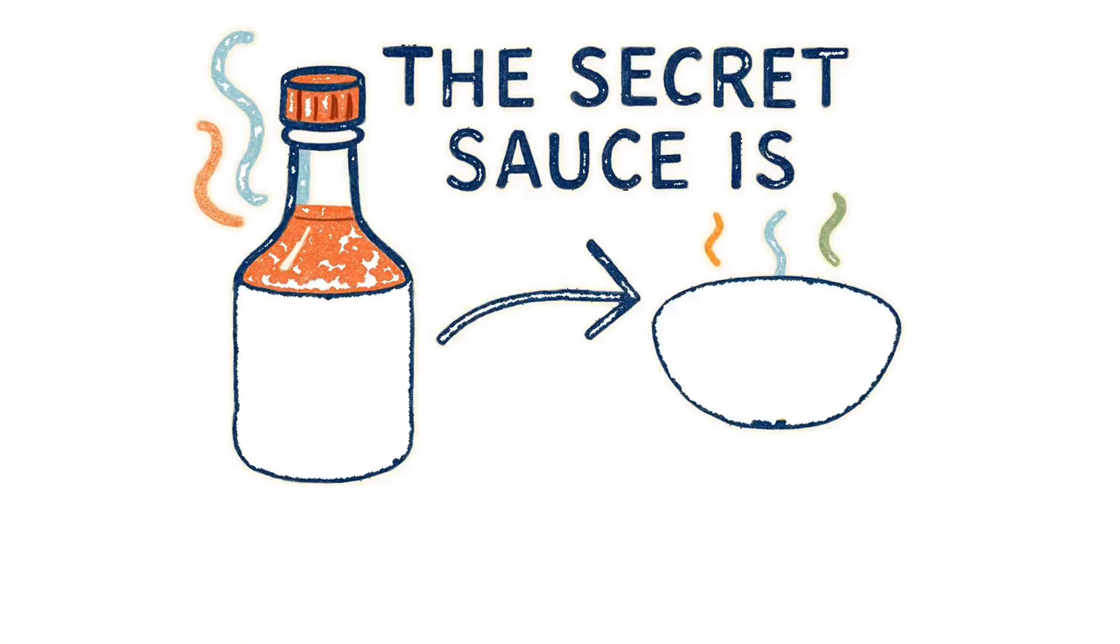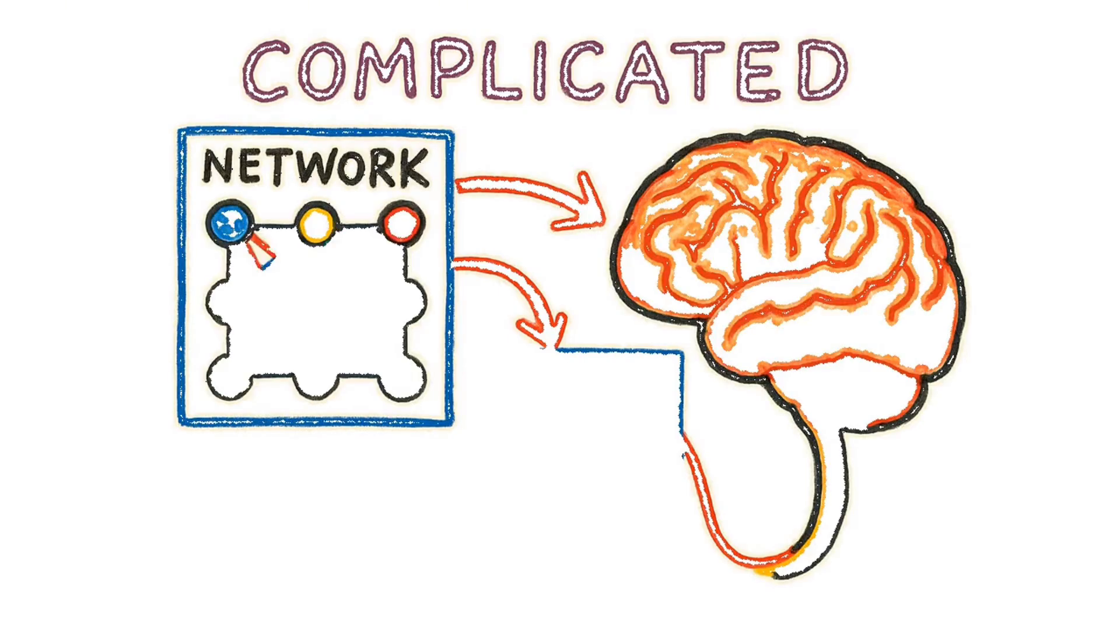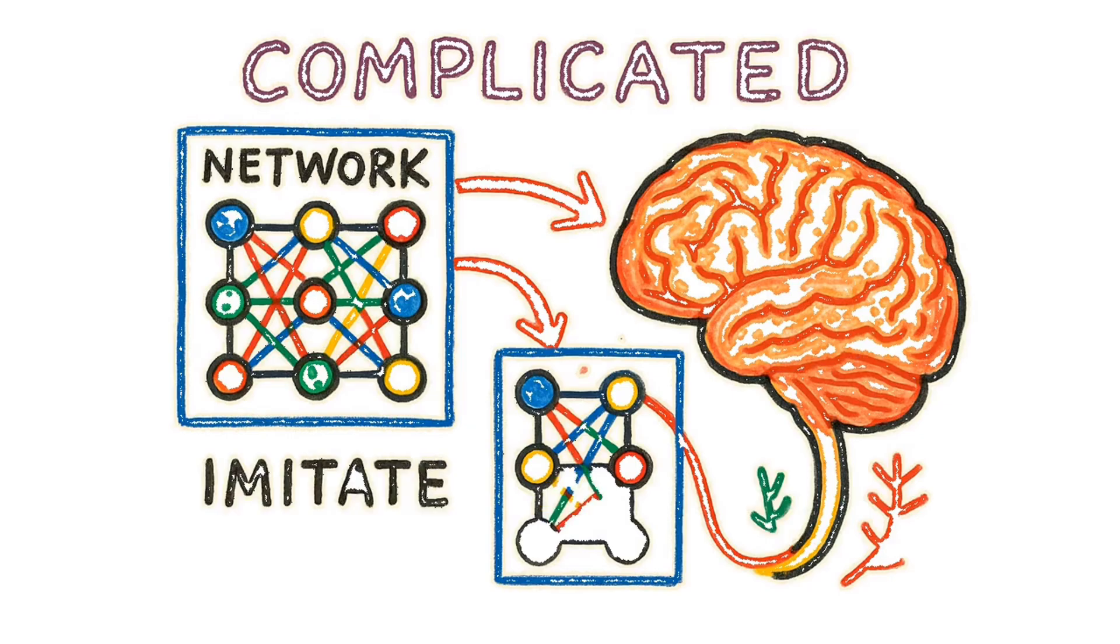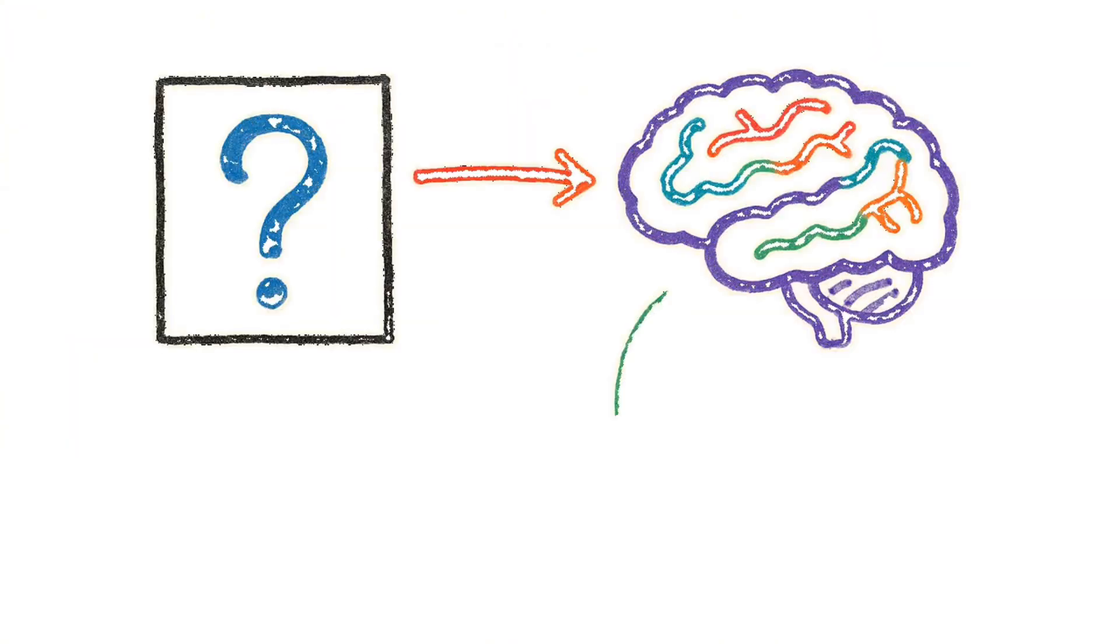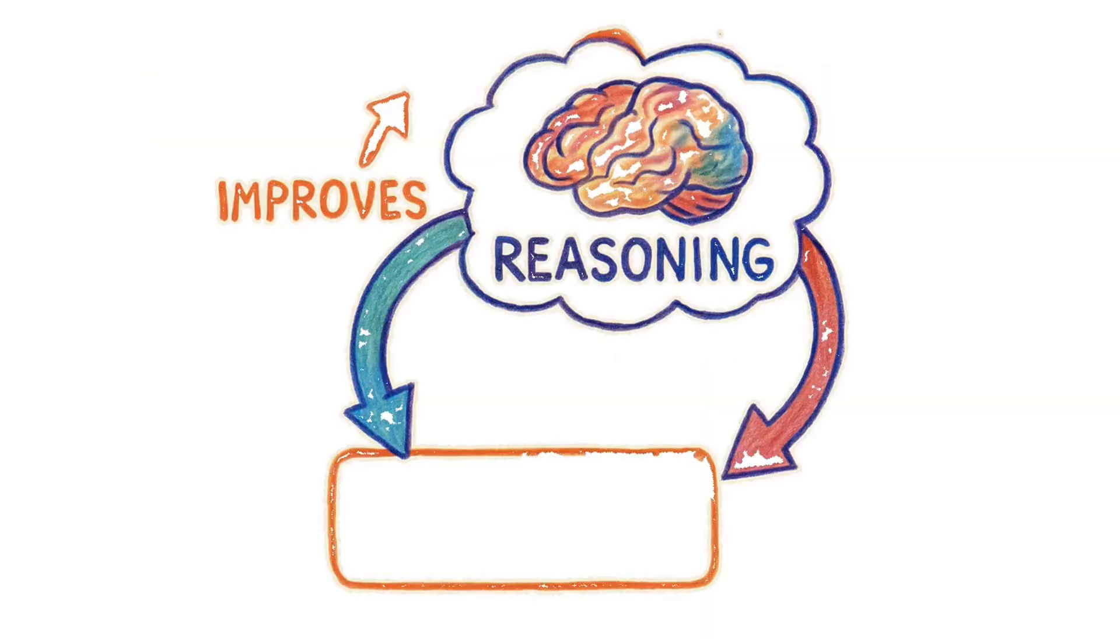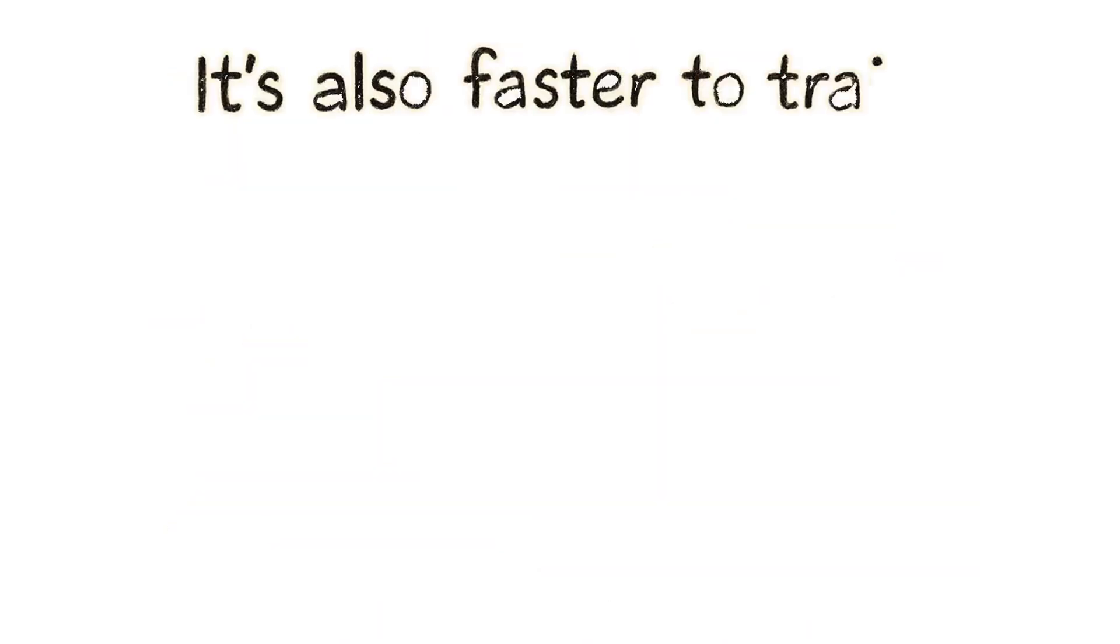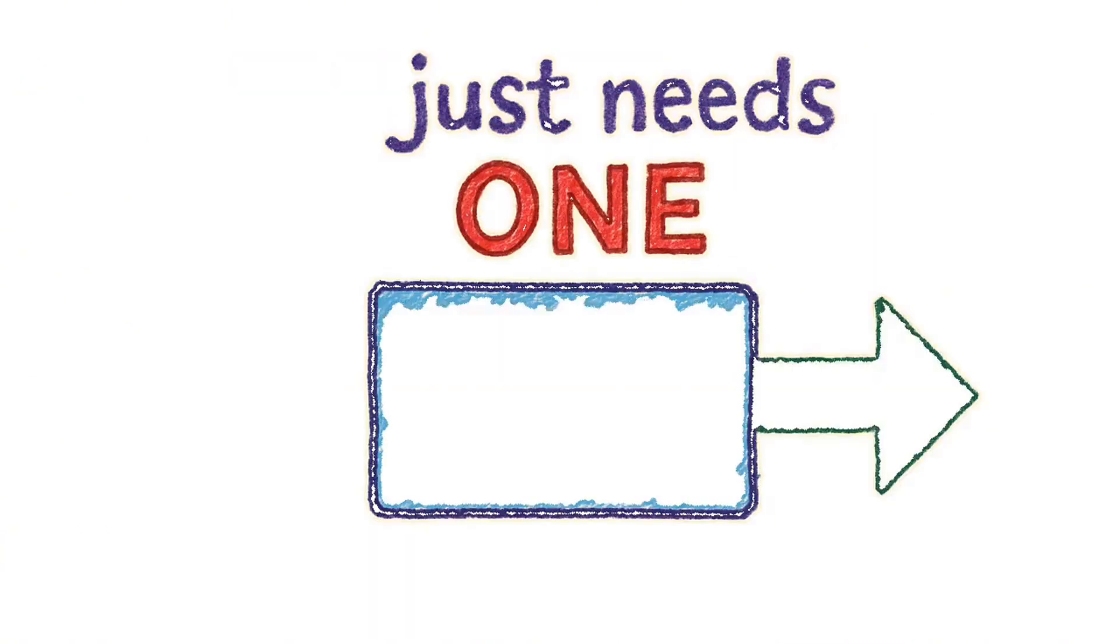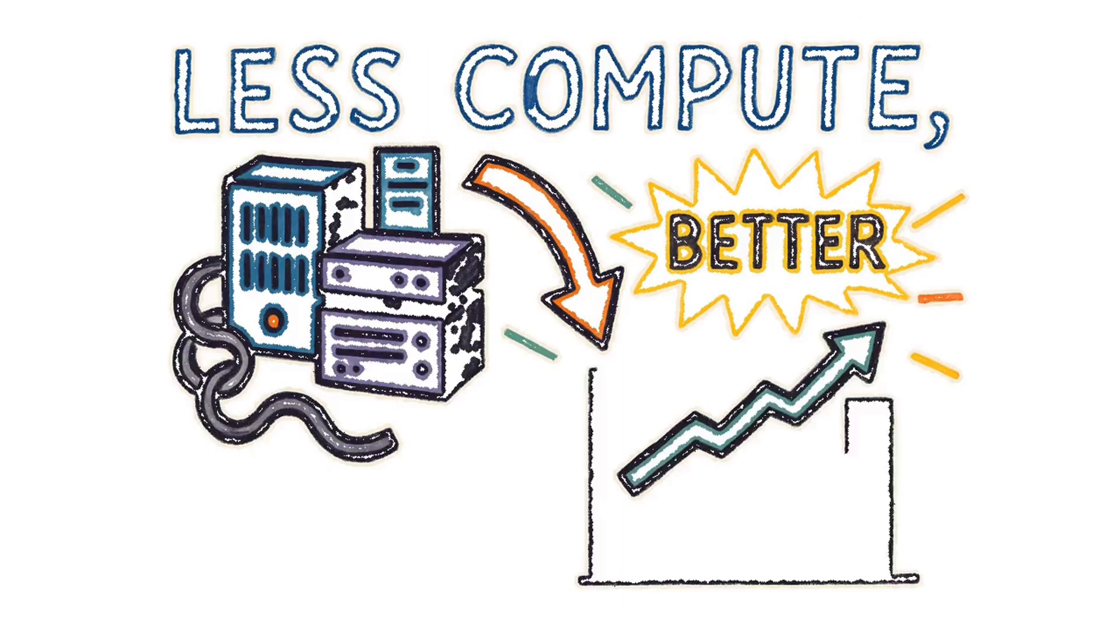The secret sauce is simplifying the whole approach. The old model was complicated. Two networks trying to imitate the brain. Fancy, biological, and totally unnecessary. TRM simplified it to one network, one loop. It just uses the question, its current answer, and its own chain of thought. The model improves its reasoning, then uses that better reasoning to improve its answer. Simple. Elegant. Devastatingly effective. It's also faster to train. The old model needed two complex passes. TRM just needs one. It learns to recognize the right answer and stop early. Less compute, better results.